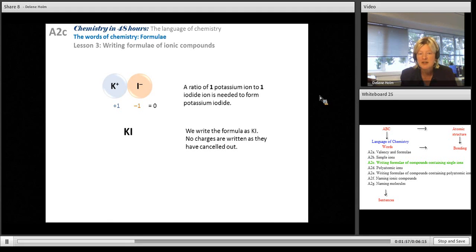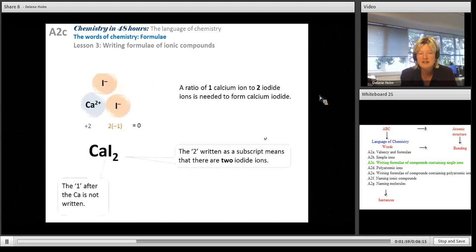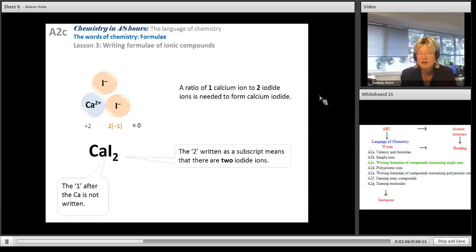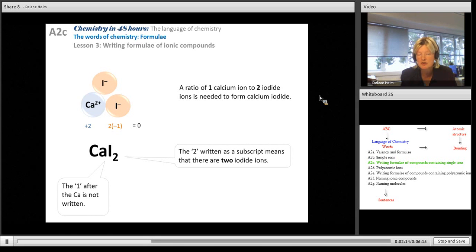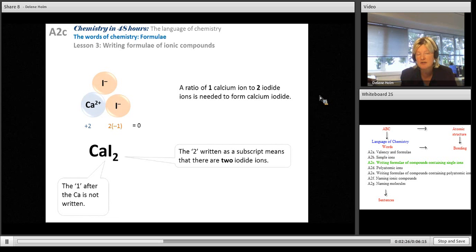Here's another example of calcium iodide, where calcium has a charge of plus two. You're going to need two iodides to make an overall charge equal to zero. So CaI2 does not show any charges because it is neutral. We don't write the one after calcium because we never write ones, but we do have to write the two for the iodide because I need two iodide ions for every one calcium.